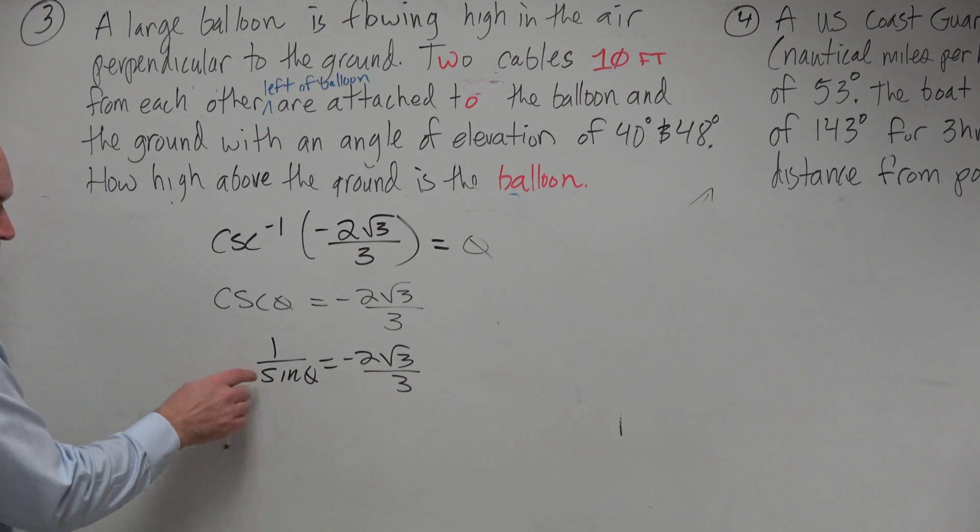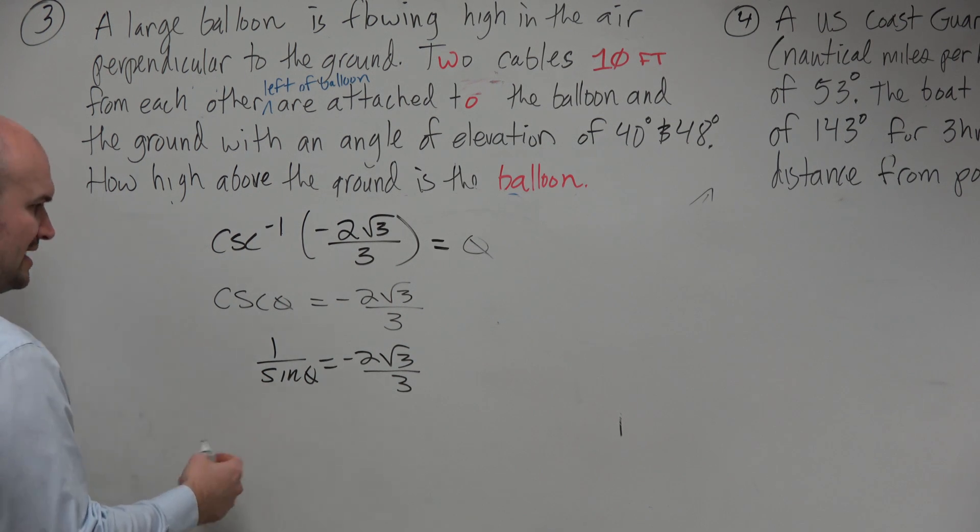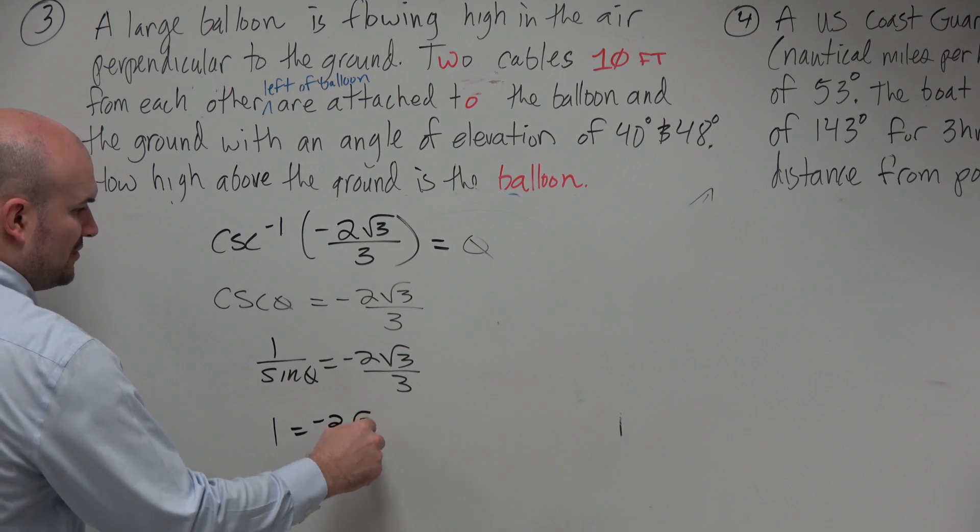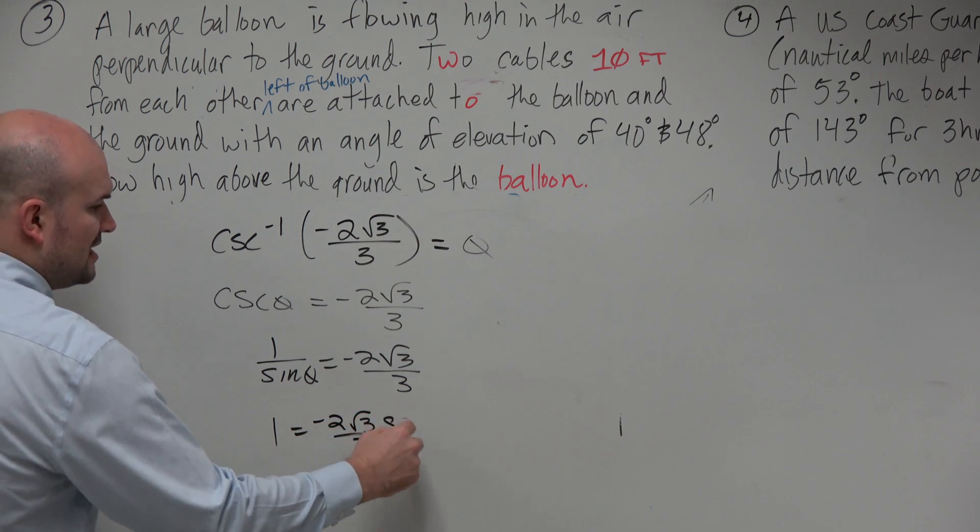And now, if we want to go ahead and get sine by itself, we've got to get it off the denominator. So I'll multiply by sine on both sides. And by doing that, I get 1 equals negative 2 square root of 3 over 3 times sine of theta.